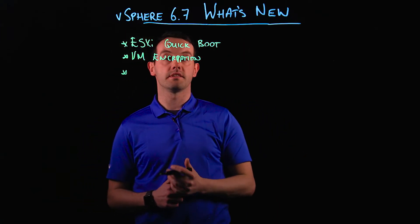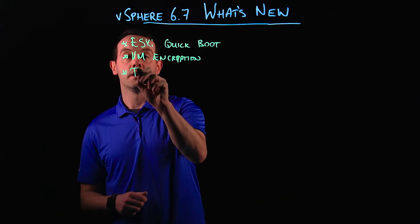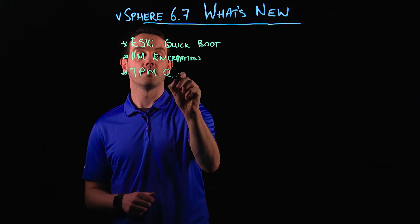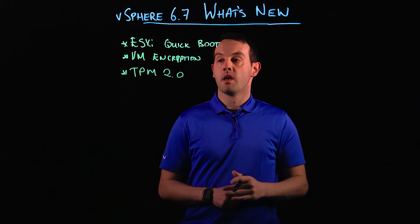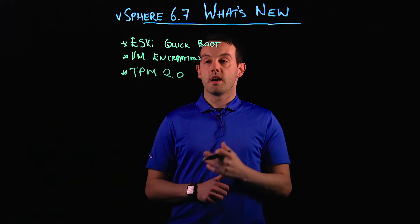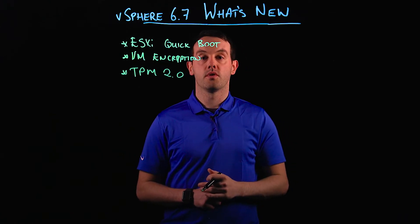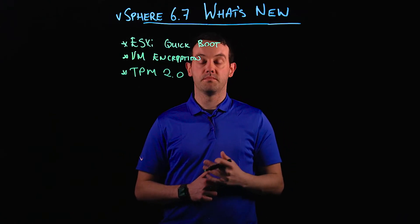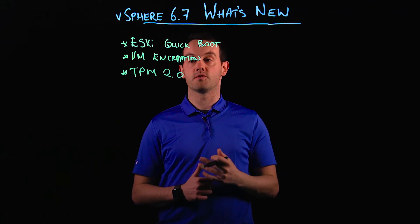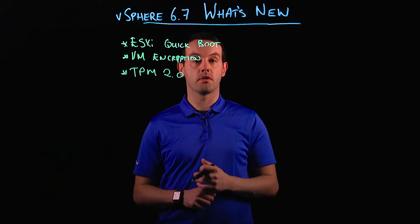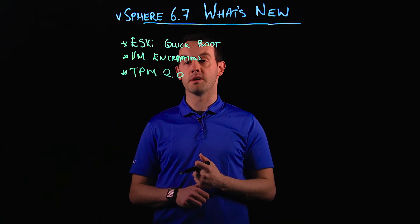vSphere 6.7 also brings TPM 2.0 support. With that, it allows us to more securely ensure that what has booted on the ESXi host is trusted, so that no malicious software or unsigned VIBs may be present.